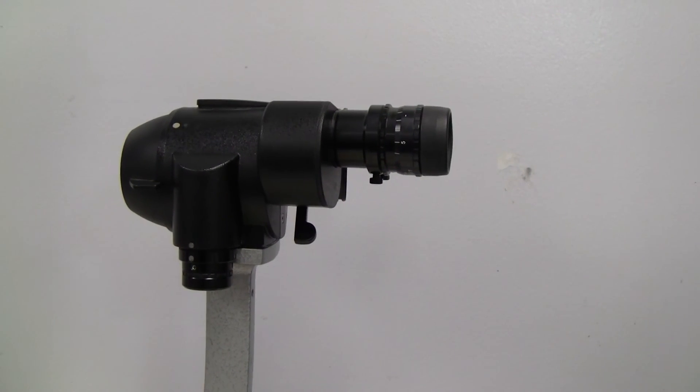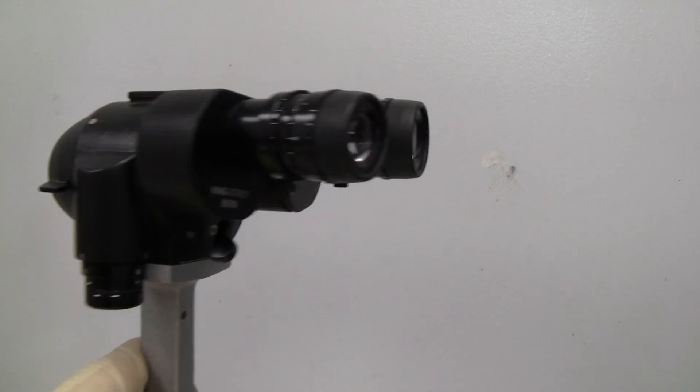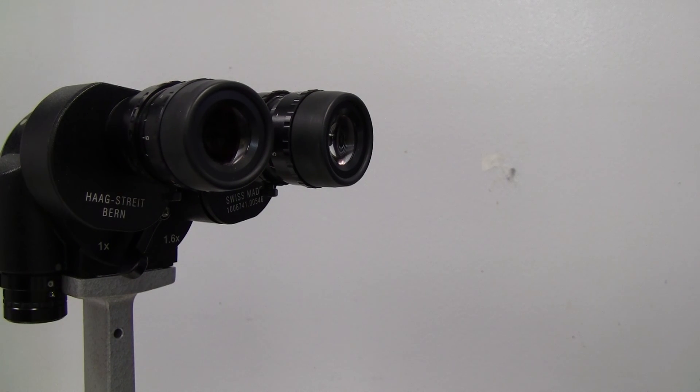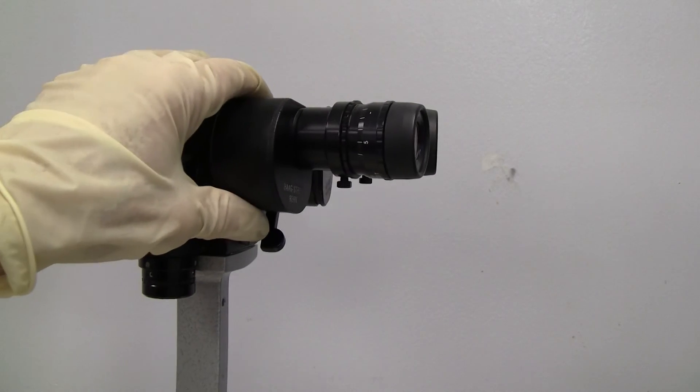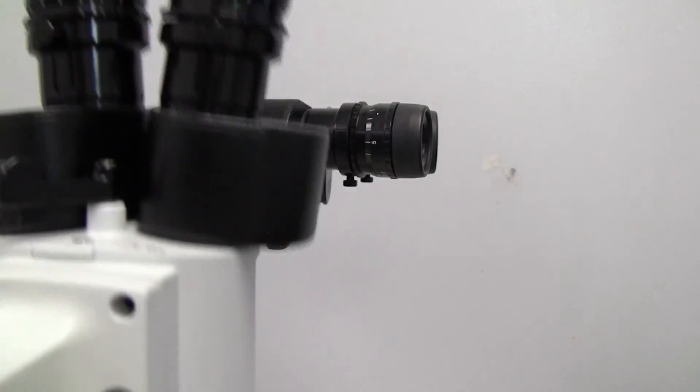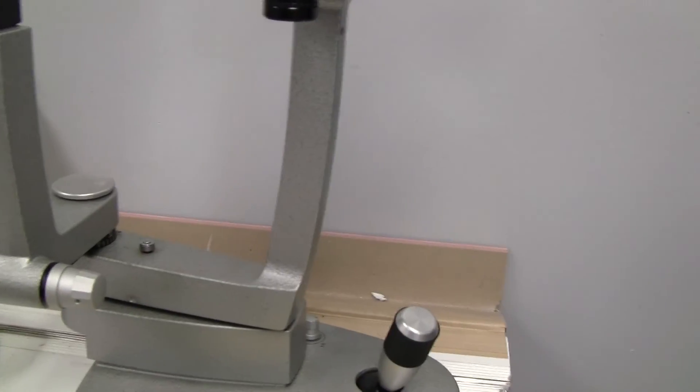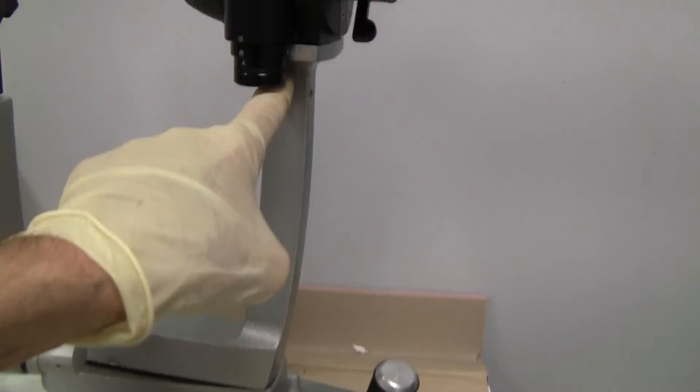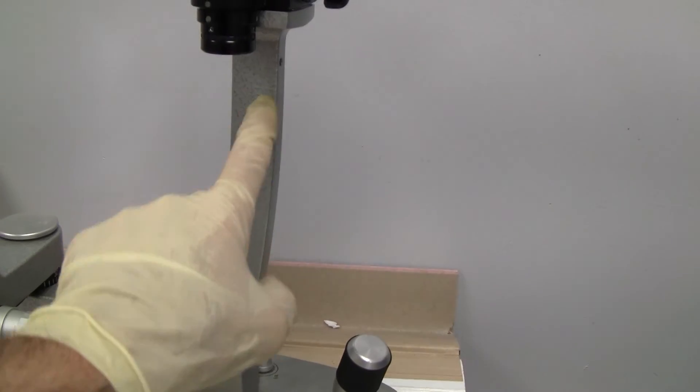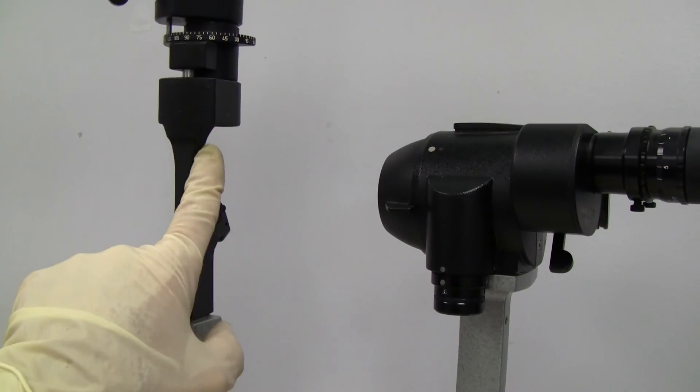Now on the head, Haag-Streit says that you cannot adjust the head if it's out of alignment. And you have to send it in. This is the bottom. And when you send it in, you'd send it in with the whole arm, the whole arm attached to the head. That's the only thing you'd have to send in. You wouldn't have to send in the illumination tower.